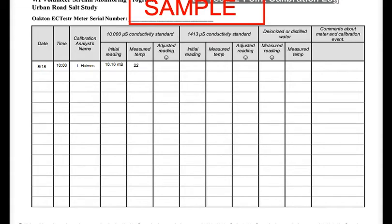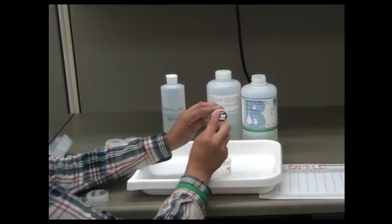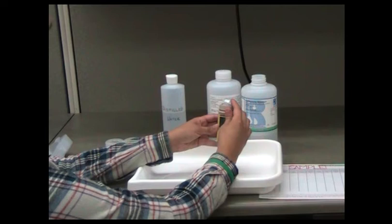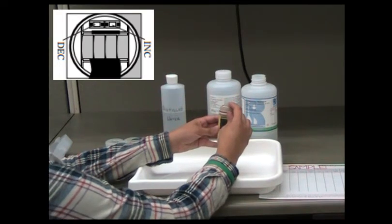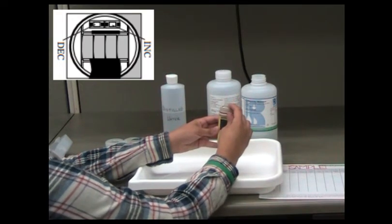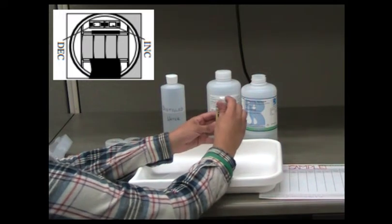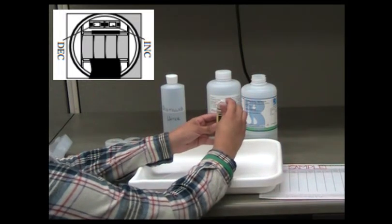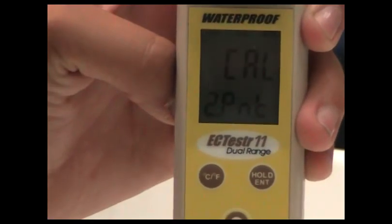Record the temperature on the calibration log. Keep the probe in the standard solution and press the increase button to enter calibration mode. The increase and decrease buttons are located behind the batteries. When the screen on the meter is facing you, the increase button is the one to the right and the decrease button is to the left. When you press the increase button, CAL should appear on the screen.